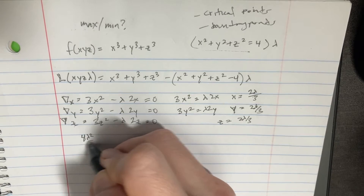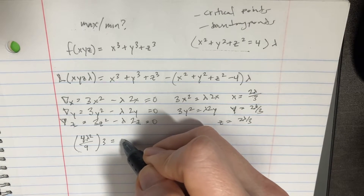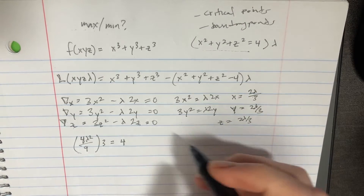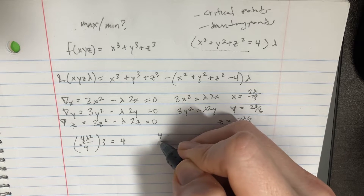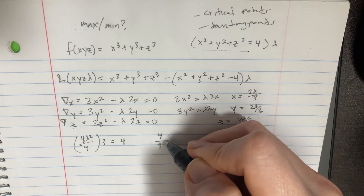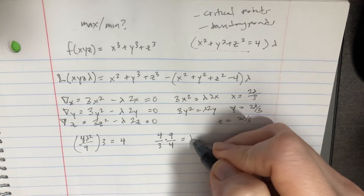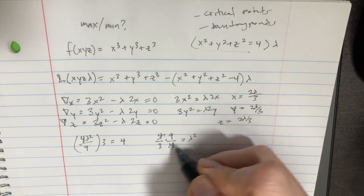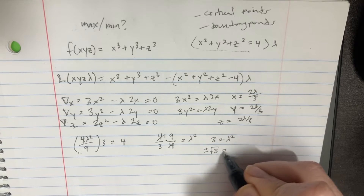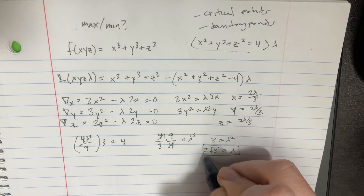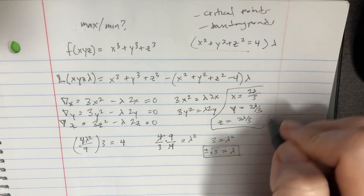Plugging back into the constraint, each variable squared gives 4λ²/9, and summing three of those and setting equal to 4: 3 · (4λ²/9) = 4, which simplifies to 4λ²/3 = 4, so λ² = 3, giving λ = ±√3.